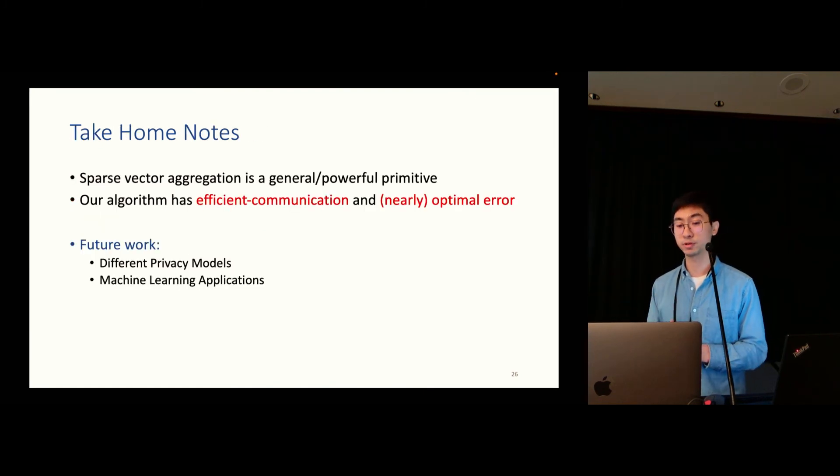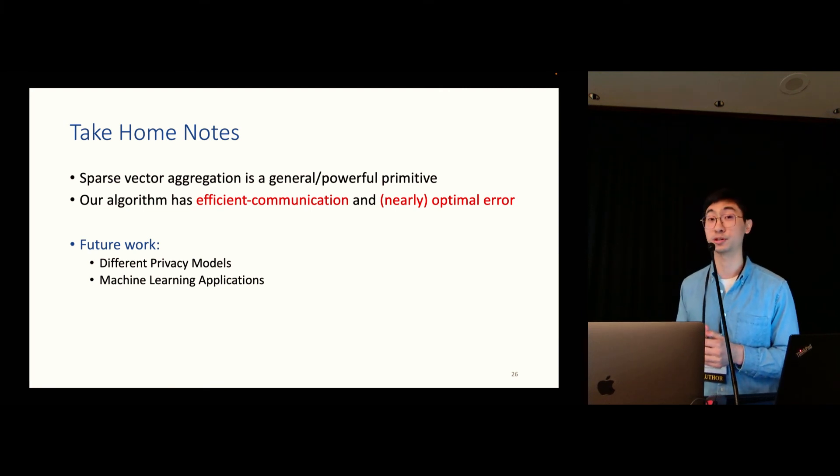So yeah, that's it. Here are some final take-home notes. Sparse vector aggregation is a very general and powerful primitive, and our algorithm has efficient communication and nearly optimal error. So for the future work, we would like to do sparse vector aggregation under different privacy models, and we would like to apply our technique to machine learning models. So yeah, thank you, and I'm very happy to take questions.